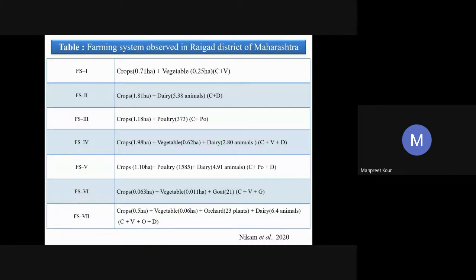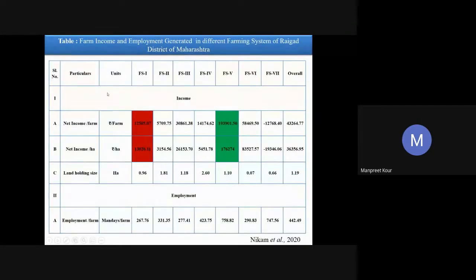A survey study of 120 farmers examined seven different farming systems. Farming System 5 (FS5) was found to be the most remunerative. FS4 had a land holding of more than two hectares. Most farmers have land holdings of less than two hectares. FS5, FS6, and FS7 are all integrated farming systems. The most remunerative FS5 demonstrates that how judiciously you divide your land and allocate enterprises matters — skill and knowledge are required for establishing an IFS unit.